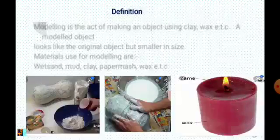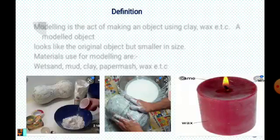Before we define modeling, if we look around our house, we will see on our dining table cups, plates, and spoons. In the kitchen, you will see clay pots, and outside you will see flower vases. All these things are objects of modeling.